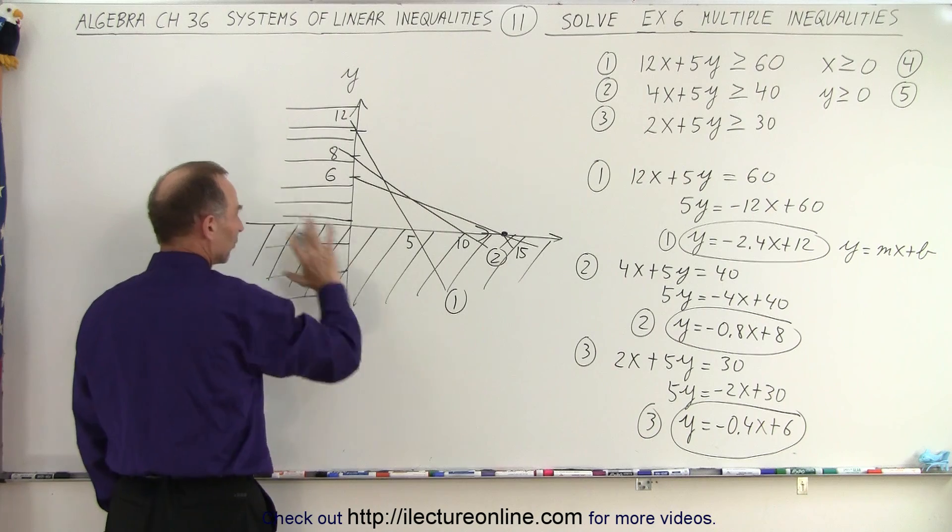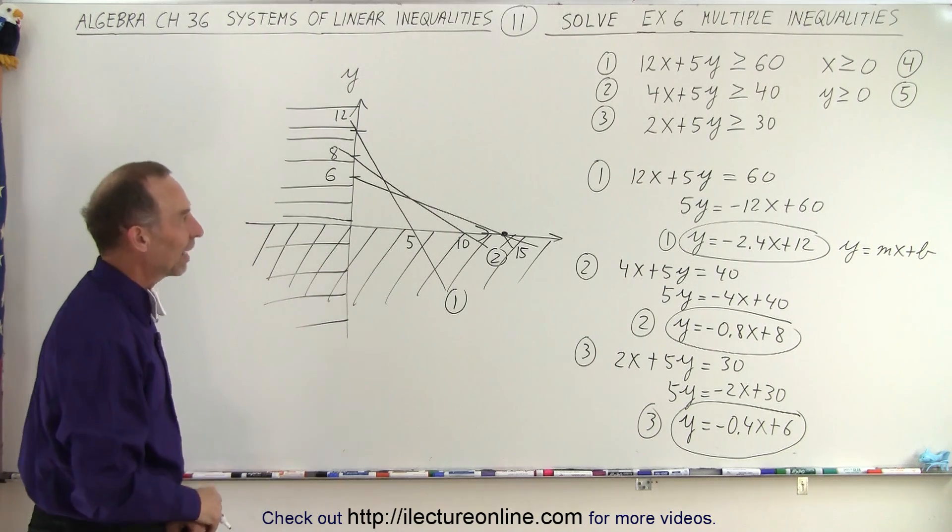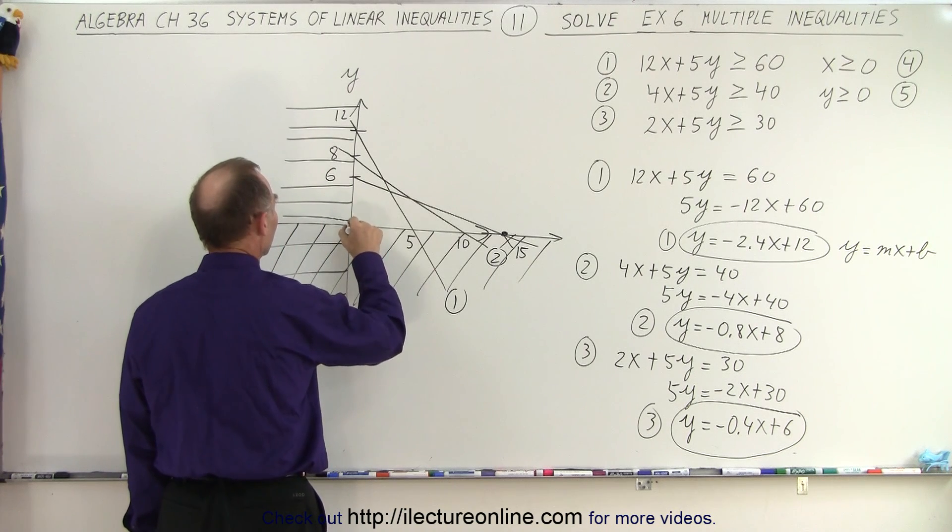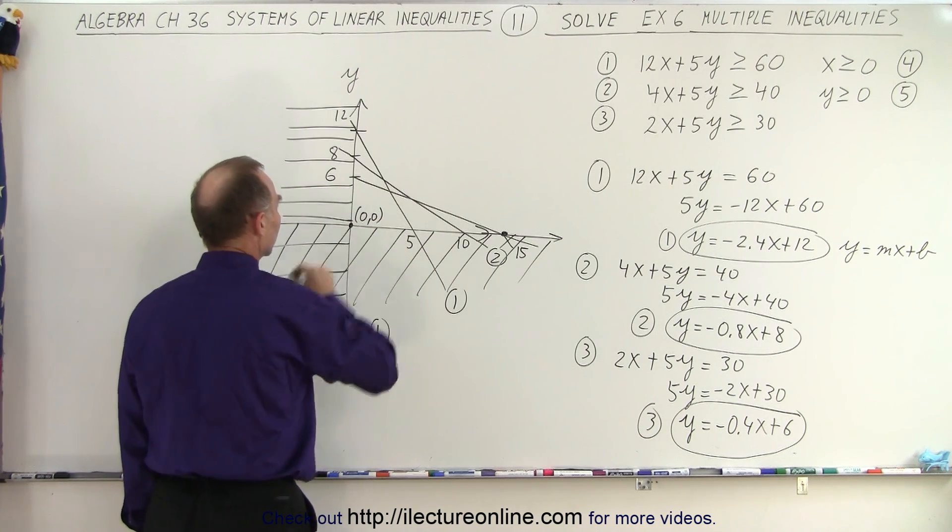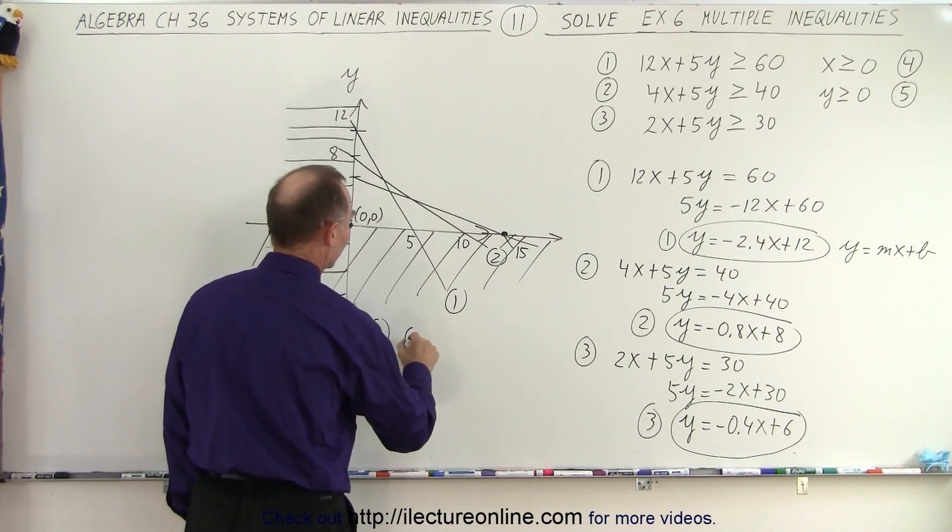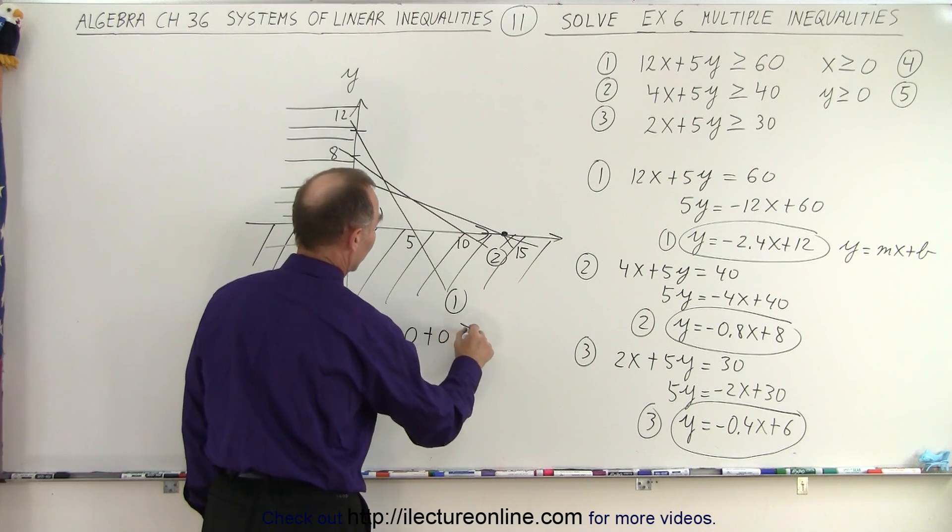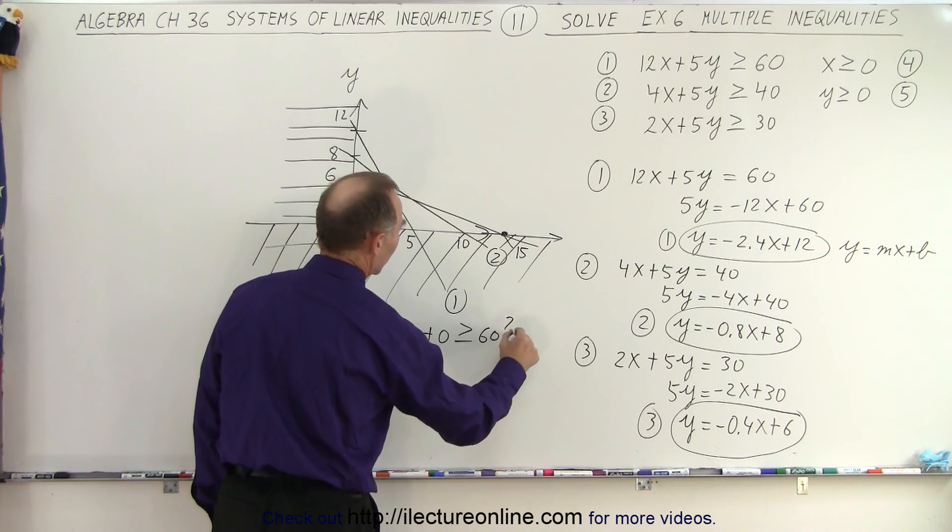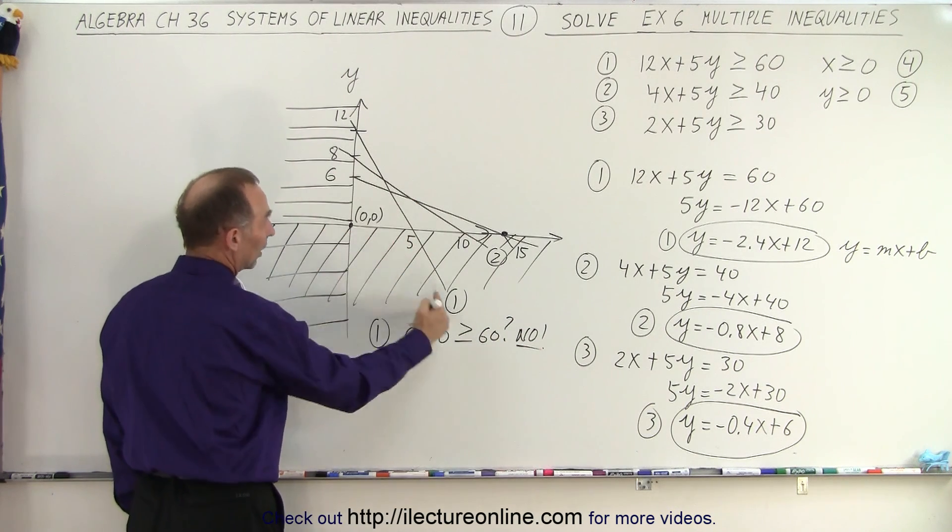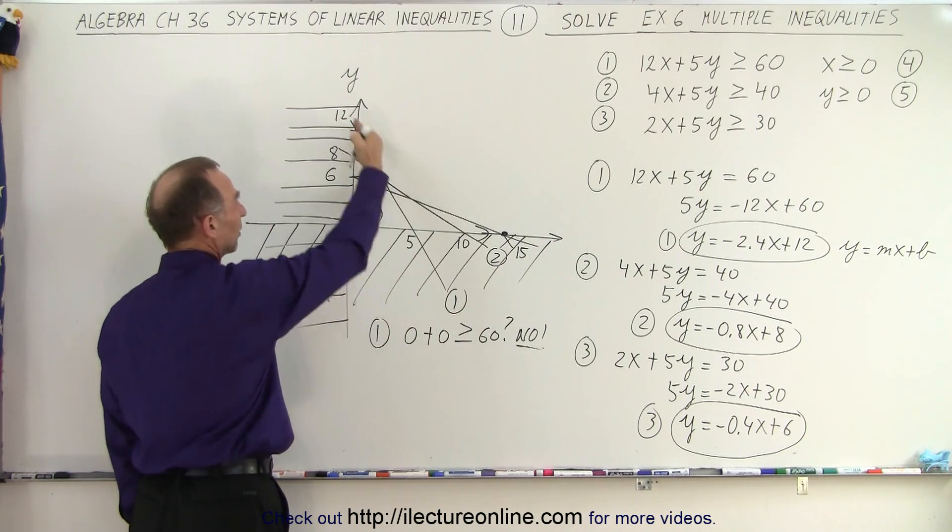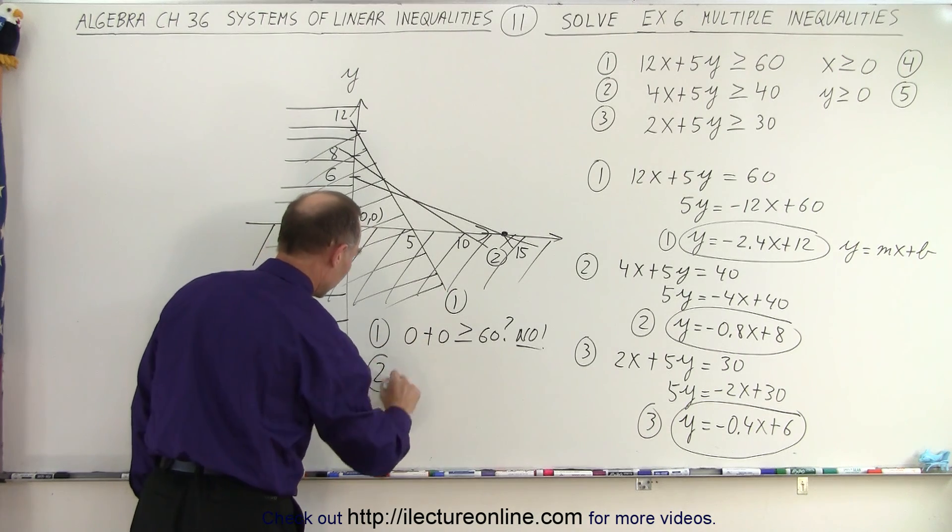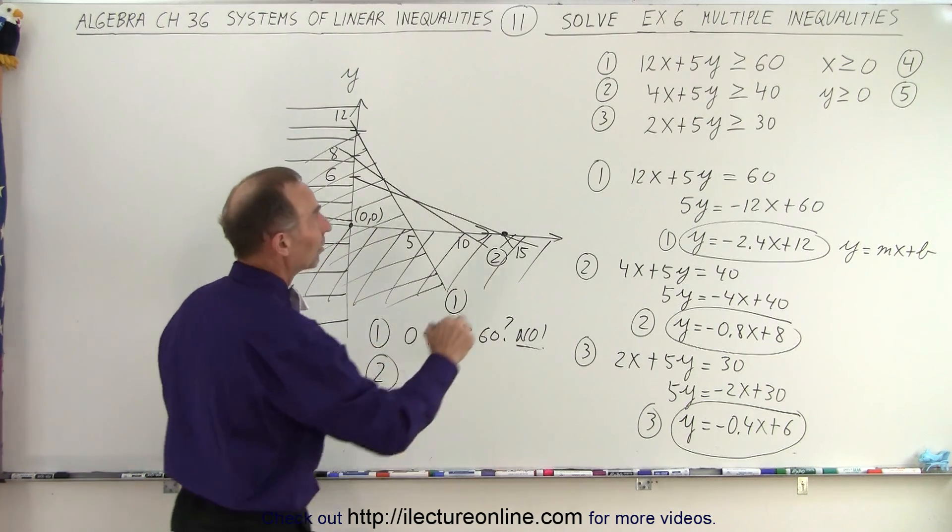Now what else we have left. Starting with number one, we're going to try test point. I like test point zero zero like this, and let's plug in some zeros. So we have zero plus zero, is that greater than or equal to 60? Question mark. And of course the answer is no. That means zero zero lies in the region relative to line number one that does not belong to the solution, so we get rid of that.